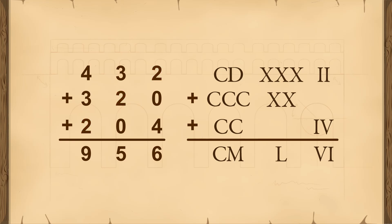On the other hand, in the Roman system, 2, 20, and 200 are represented by different symbols.